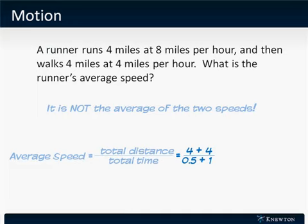While running, the time is 4 miles at 8 miles per hour, which takes 4 over 8, or one half of an hour, and 4 miles at 4 miles per hour, which takes 1 hour. So the total time is 0.5 plus 1.